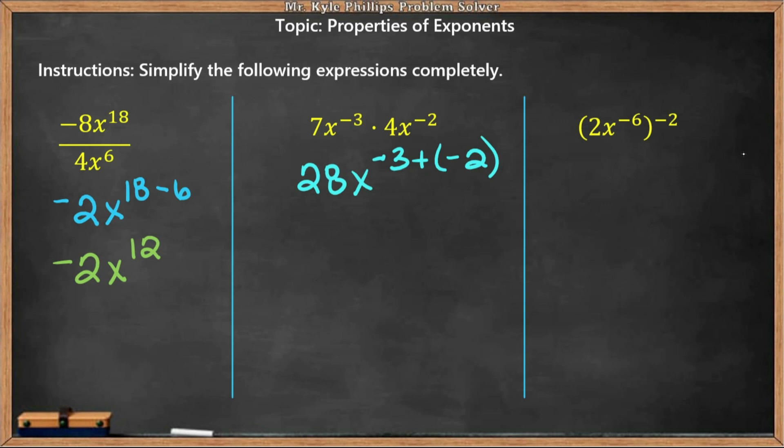So here we have -3 plus -2. This will simplify to be 28x to the -5th. And now they want us to simplify completely, so we cannot have negative exponents in our solution. The way we simplify a negative exponent is we are going to move it to the bottom. So here, now that it's in the numerator, we'll move it to the denominator.